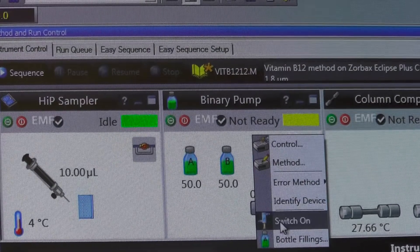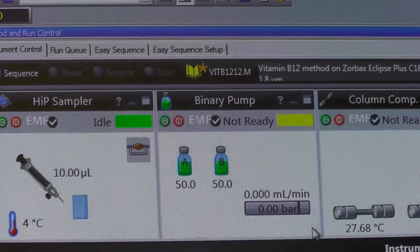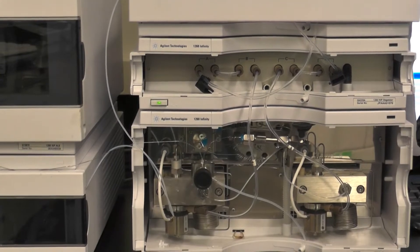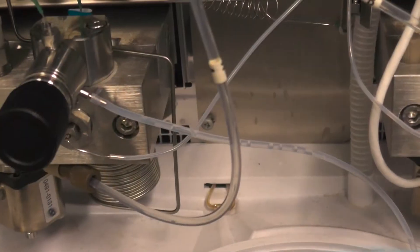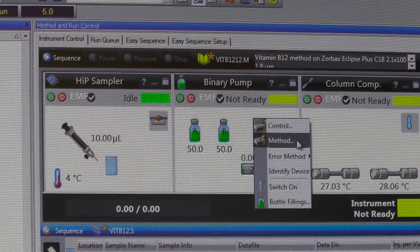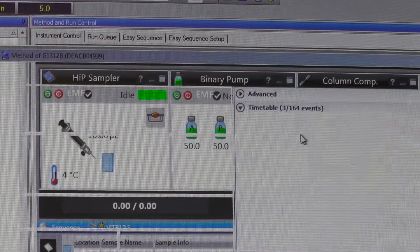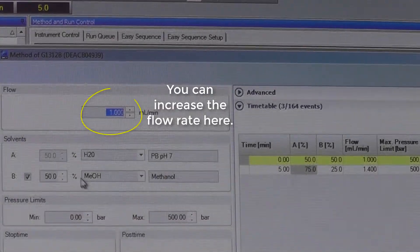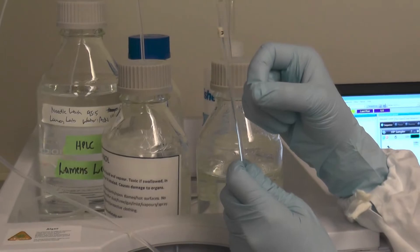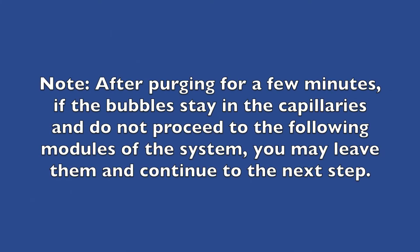Right-click on the binary pump icon and select Switch ON. Open the purge valve by turning gently counterclockwise to get rid of any large bubbles in the system. If some bubbles persist, you can increase the flow up to 5 ml per minute with the purge valve open and gently tap the capillary to remove them. If the bubbles are expected to persist for a long time and not enter the subsequent modules, then it is alright for them to stay.